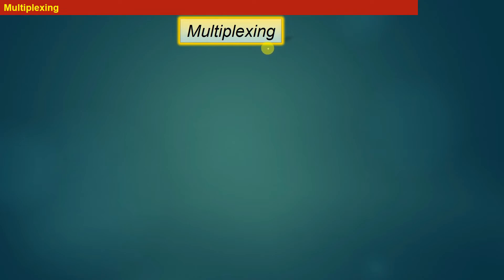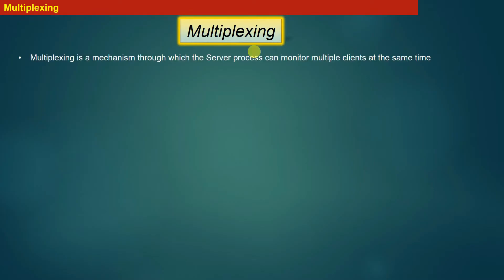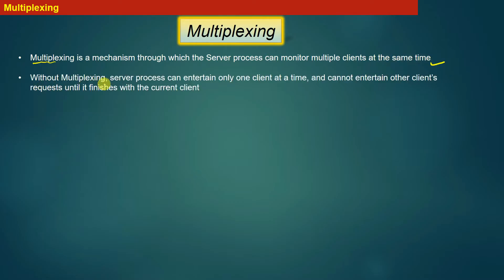In this lecture we will study the concept of multiplexing. Multiplexing is a mechanism through which the server process can monitor multiple clients at the same time. Without multiplexing, a server process can entertain only one client at a time and cannot entertain other clients' requests until it finishes with the current client.